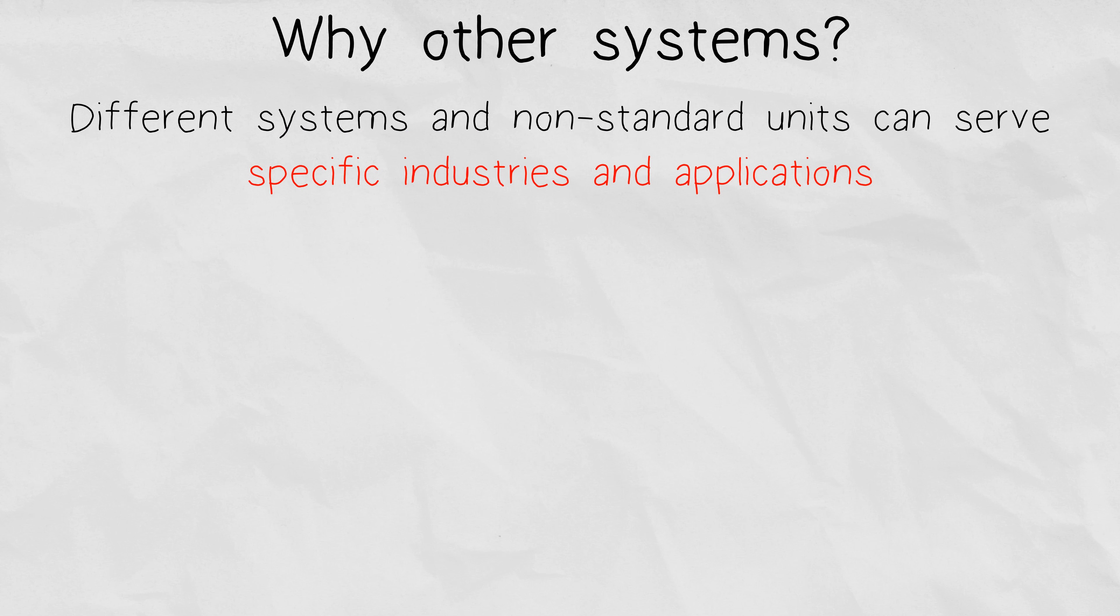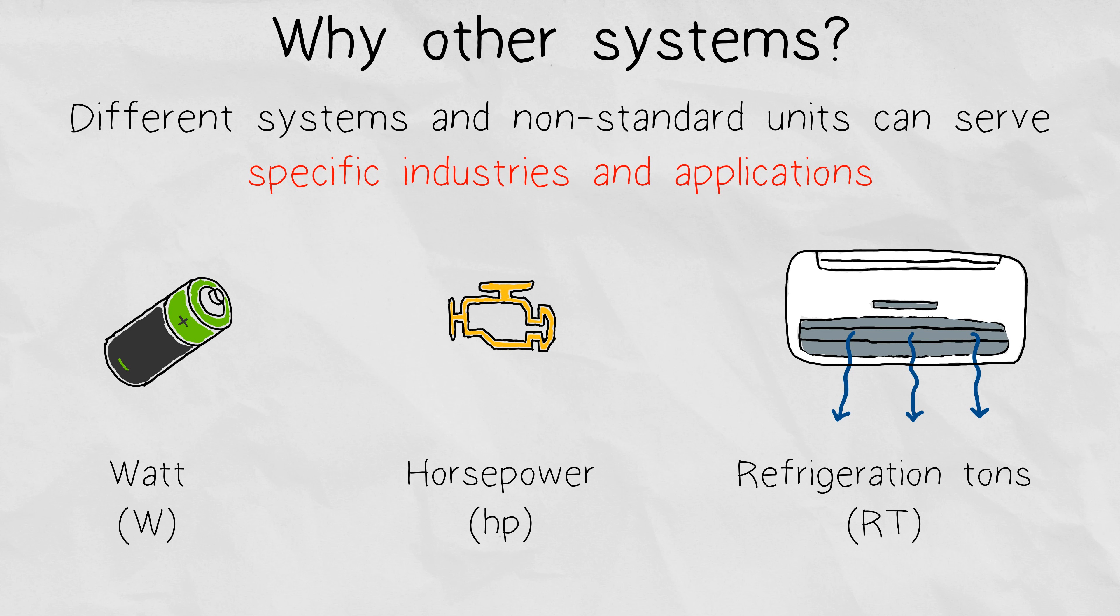Another good example is the property of power. For batteries, you might use the unit of watts, which is derived from the SI units, but then you might use imperial horsepower for an engine. And the air conditioning industry even uses the power units of tons of refrigeration, which is the rate of heat transfer that results in melting one ton of pure ice for 24 hours.